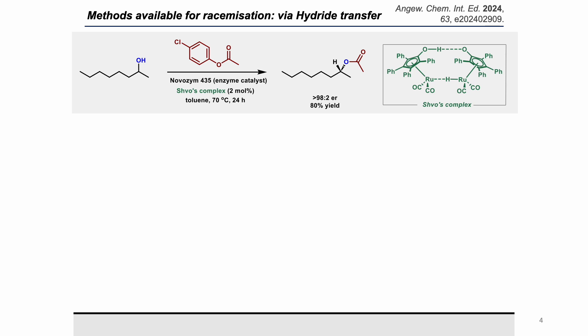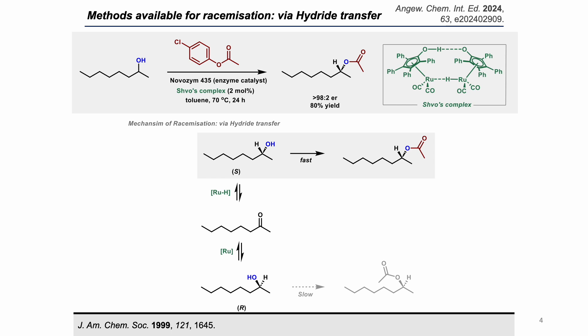The second method of racemization is hydride transfer, exemplified by Bäckvall using a ruthenium hydride complex as a racemization catalyst, which racemizes alcohols via a ketone intermediate and reversible hydride addition. The limitation of both hydride transfer and proton transfer-based racemization is that you need a hydrogen either at the stereogenic center or alpha to it. Systems lacking hydrogen at these positions cannot be studied via these racemization modes.